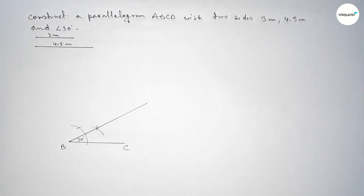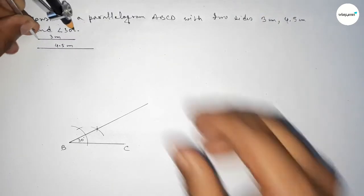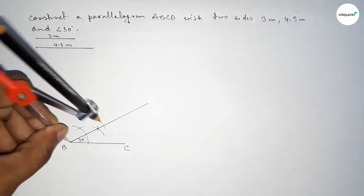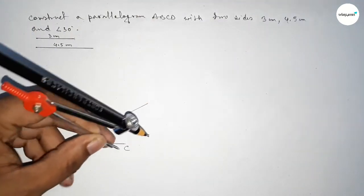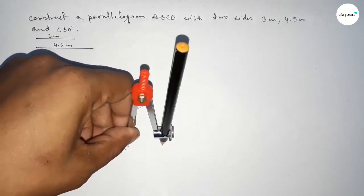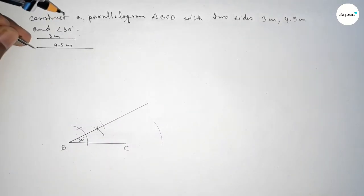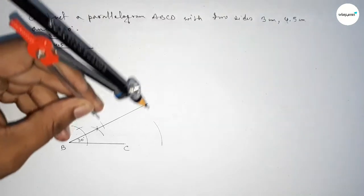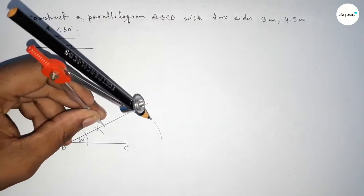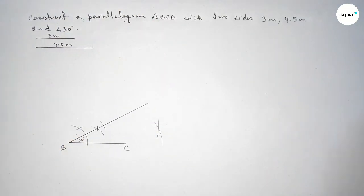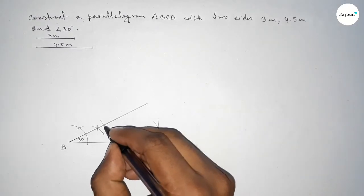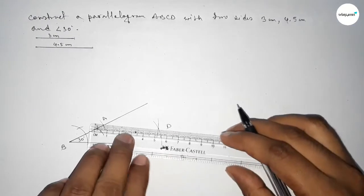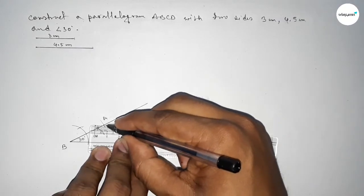Now taking the length 3 centimeter using the compass and putting the compass here and cutting here. Then putting the compass and drawing an arc. Now taking the length 4.5 centimeter using the compass, putting it here and cutting so both curves intersect — one at point A and one at point D.